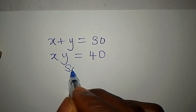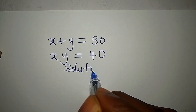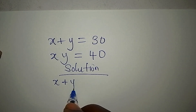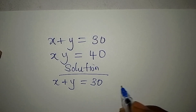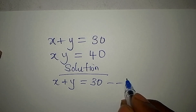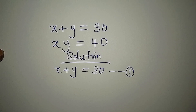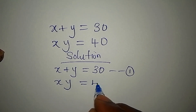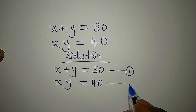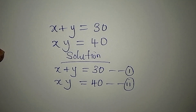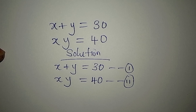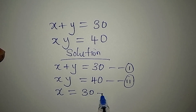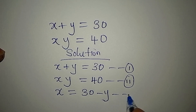Hi everyone. Let's solve this right away. x plus y equals 30 — this is our equation 1. And then our equation 2 is x times y equals 40. From equation 1, we can have x equal to 30 minus y. This is equation 3.